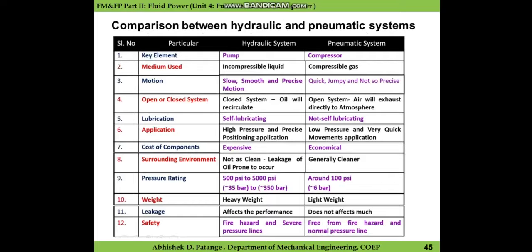As far as the pneumatic system is considered, the compressor is considered as the power-generating element because it supplies compressed air to the pneumatic system. The second parameter is the medium used. For a hydraulic system it is an incompressible liquid, typically a kind of oil, and for a pneumatic system the medium used is a compressible gas.